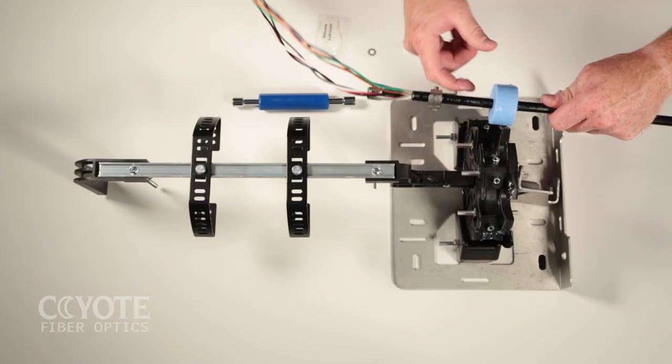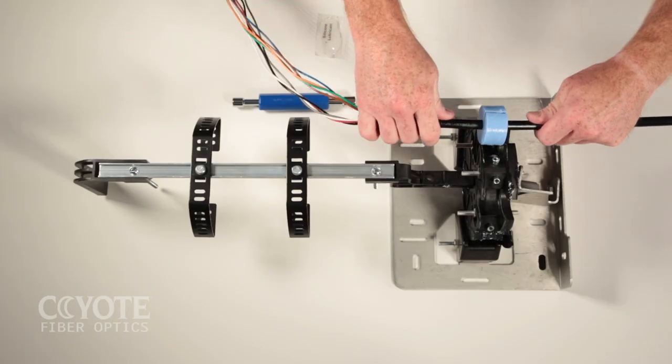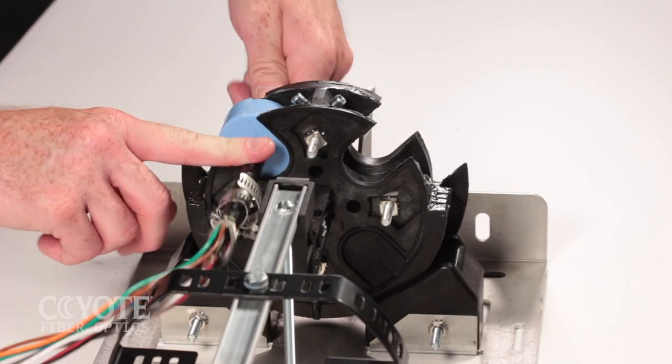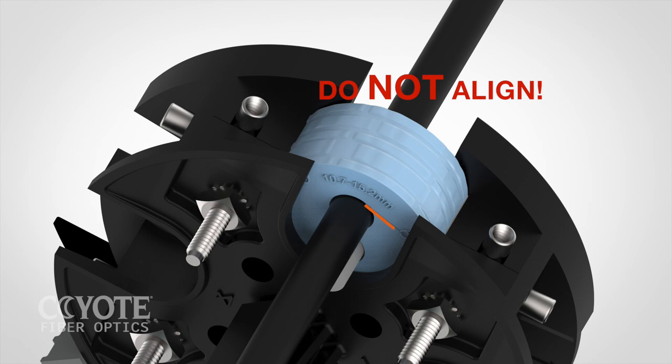Spread lubricant evenly on the outer surface of the grommet. Position the grommet in the end plate slot. Do not align a slit grommet with a port seam.